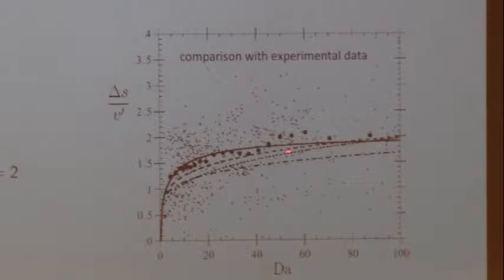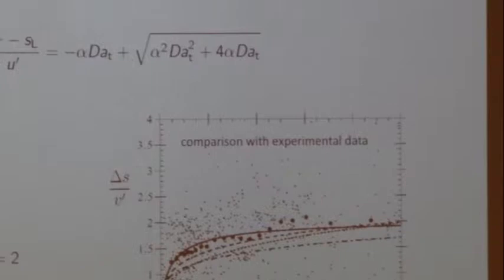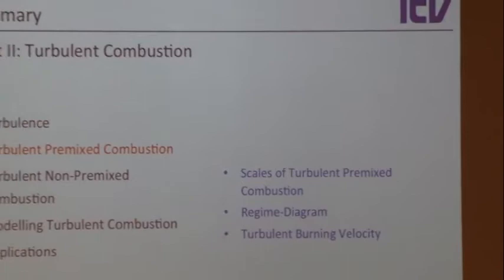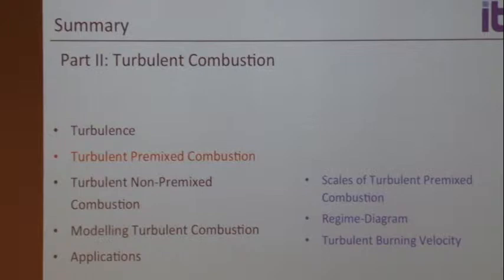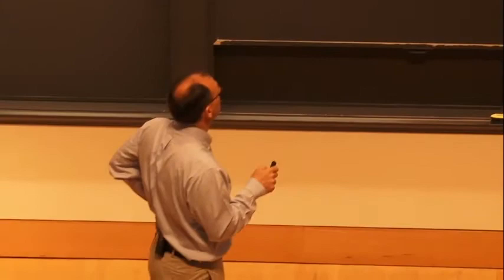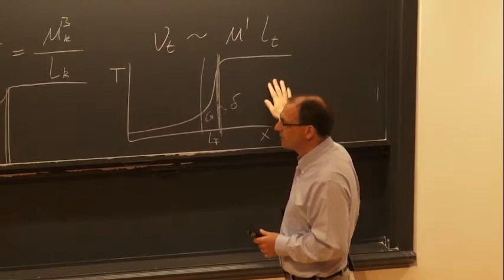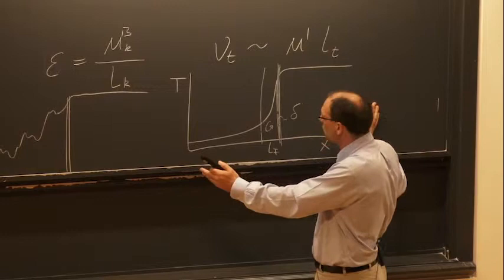So in summary for premixed turbulent combustion: we have two different regimes — large-scale (corrugated flamelet) and small-scale (thin reaction zones). Using the Karlovitz number, we identify different regimes based on the interaction of the smallest turbulence scales with the flame. In the corrugated flamelet regime, the Kolmogorov scale is much larger than the flame thickness. In the thin reaction zones regime, the Kolmogorov scale penetrates the preheat region but not the reaction zone.